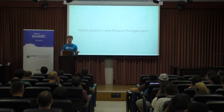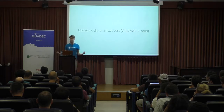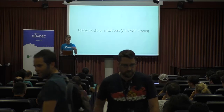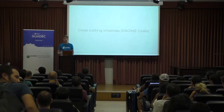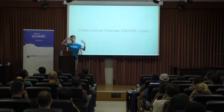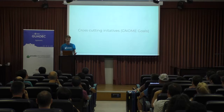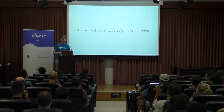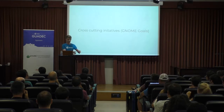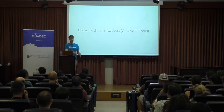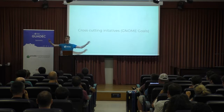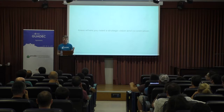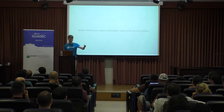Which kinds of projects need product management? One of the key things here is cross-cutting initiatives — GNOME Goals are a good example — where coordination between lots of different projects makes sense, like privacy initiatives that go all the way down the stack. At the moment, our design team does a lot of this work, ensuring coherence and consistency. But we don't really have a developer experience yet — we have things that developers do, but they're all in their little silos. Cross-cutting initiatives are really, really helpful if you have someone coordinating that work. These are areas where you need a strategic vision; you can't just get there by iterating.